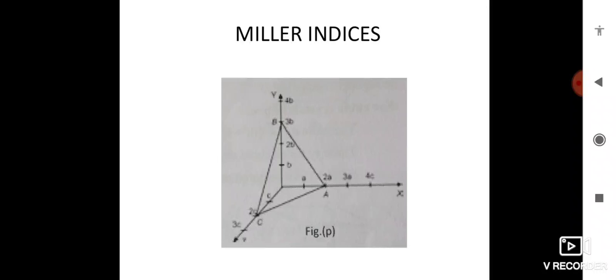For any intercept at infinity, the corresponding coordinate is 0. Suppose if the intercept is negative, the corresponding coordinate is also negative. For example, minus 1 by 2, if you multiply by LCM, you will get negative coordinate.